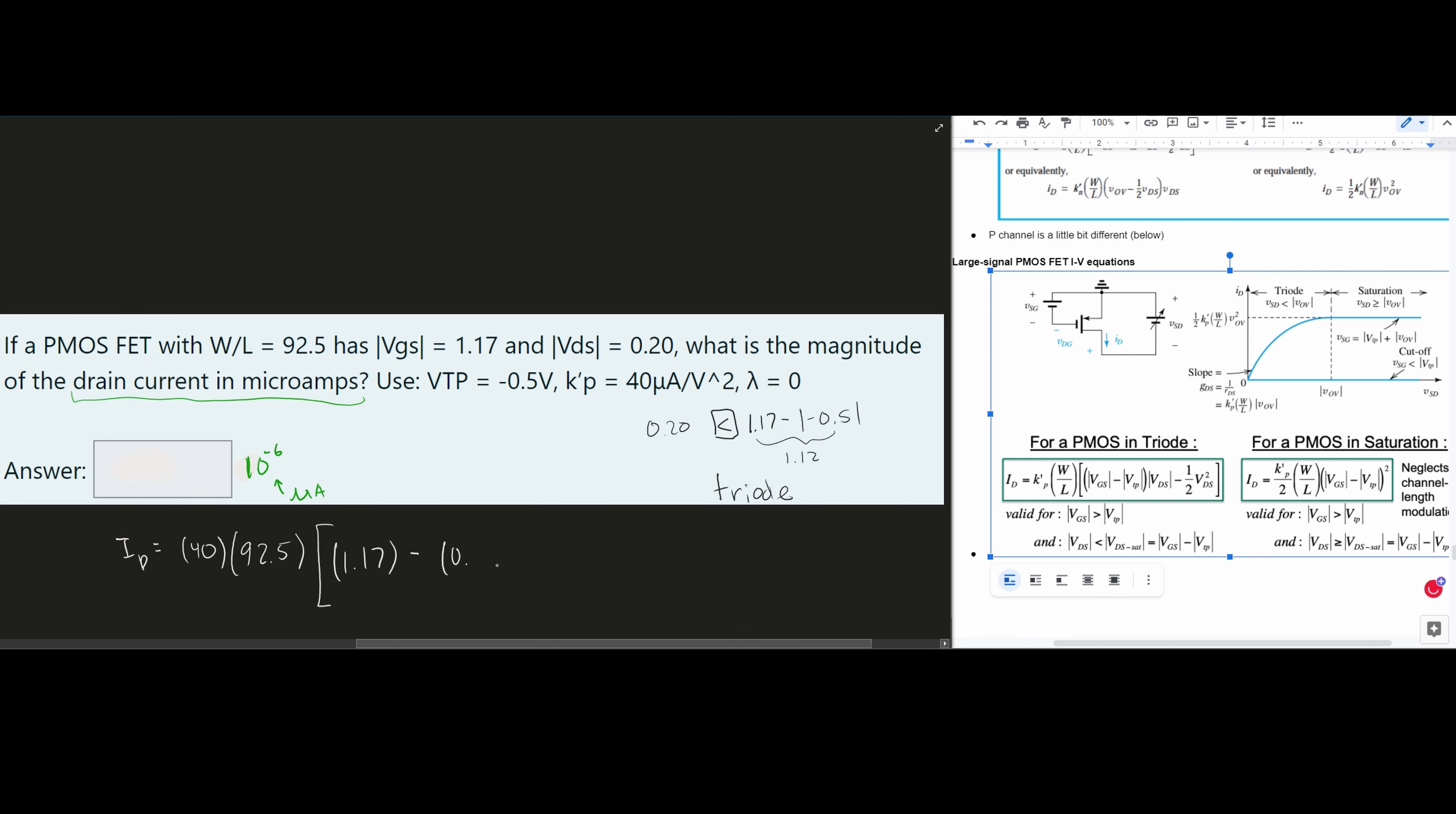Oh wait. That should be VTP. So just pay attention to how you write this in because it can mess you up if you write it incorrectly. So we have these parentheses. And then outside of here, we have our VDS, which is our 0.20. And then we are going to have minus 1 half. And then our VDS squared, which is 0.20 squared. And then this is in brackets here as well.